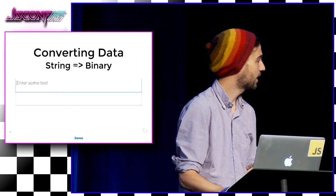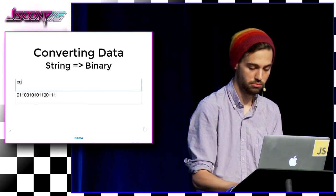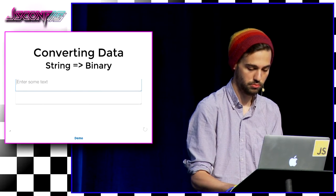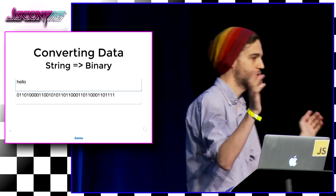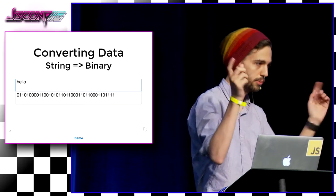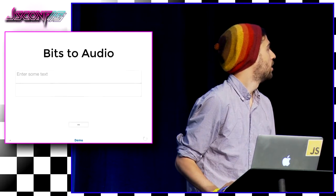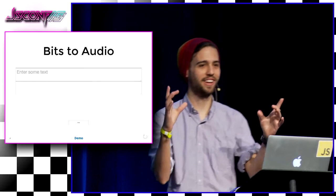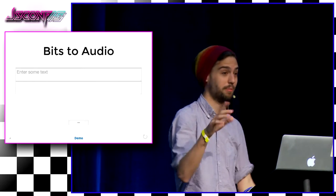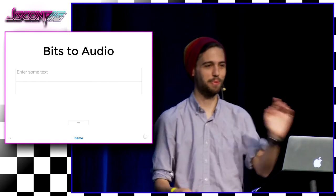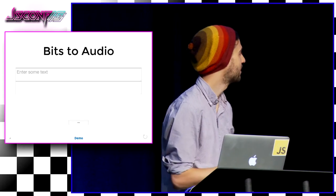We have the first two pieces — we can shift the frequency and we can look at the data. Now we need to take a string, say 'hello', and convert it to binary. String to binary is not so hard — just a little bit of JavaScript. We have our binary, and we know that we can make noise. Now we have to take this binary and put it into our waveform.